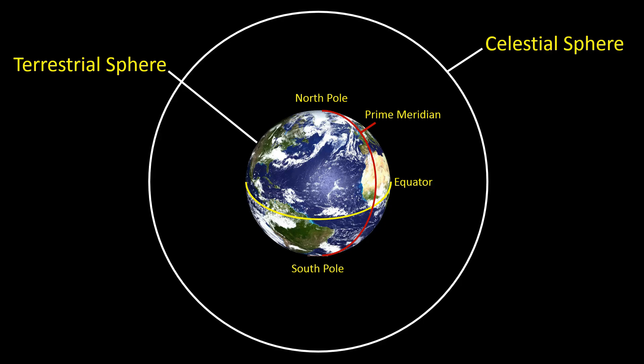There is also a coordinate system for the celestial sphere, similar to geographic latitude and longitude. Every point in the celestial sphere maps to one point on the terrestrial sphere, but due to the rotation of the Earth and the motion of the Sun, Moon, and planets, these points move in time.